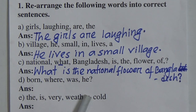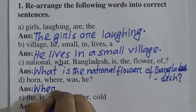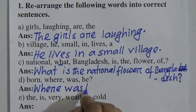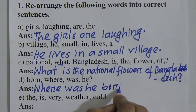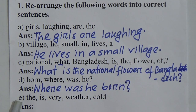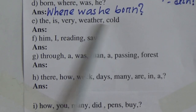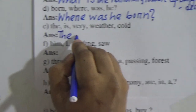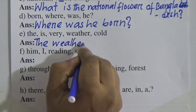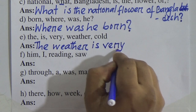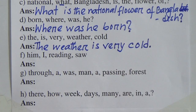Number D: 'born where was he?' A WH-word comes, so we take the WH-word first: Where — then auxiliary verb — where was he born? Question mark. Number E: 'the is very weather cold.' Take the subject first — the weather is the subject. The weather — then verb: is — then very — the weather is very cold.